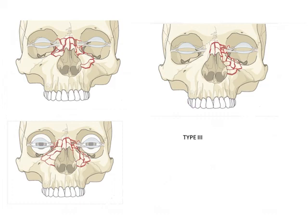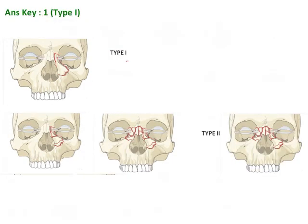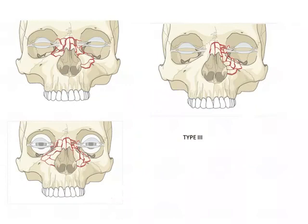These are examples of type 3, this is type 2, and this is type 1. One important thing to remember is that all three — type 1, type 2, and type 3 — can be either unilateral or bilateral.